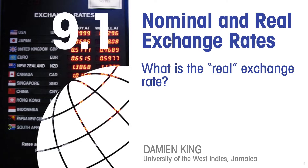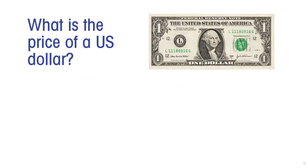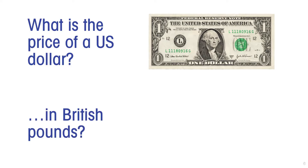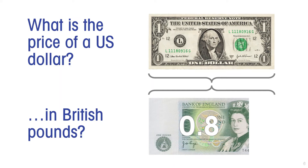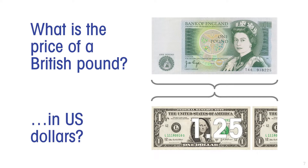What do we mean by the nominal exchange rate and what is the real exchange rate? The nominal exchange rate is the exchange rate with which you are probably already familiar — it is the price of one country's currency in terms of another. For example, what is the price of a US dollar in British pounds? Currently it takes about 0.8 of a pound to get you a dollar. Inversely, it takes about $1.25 US to exchange for one pound.